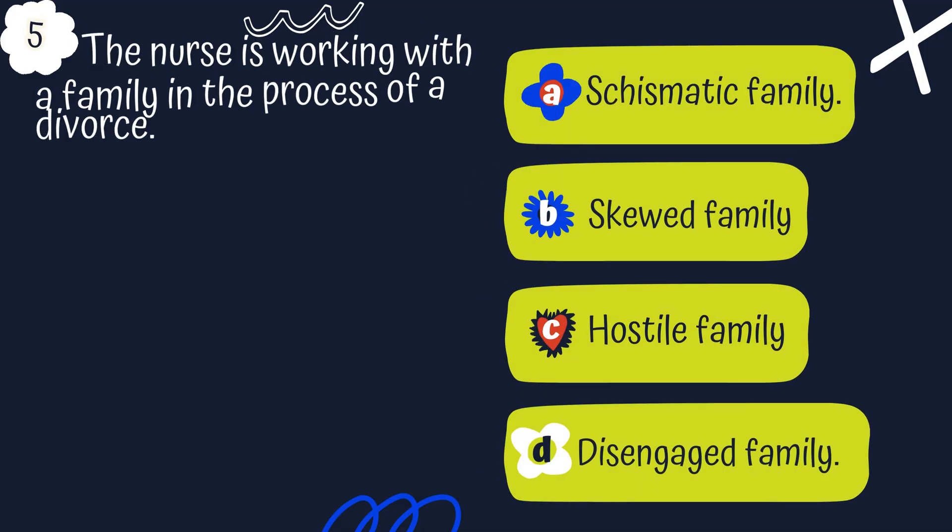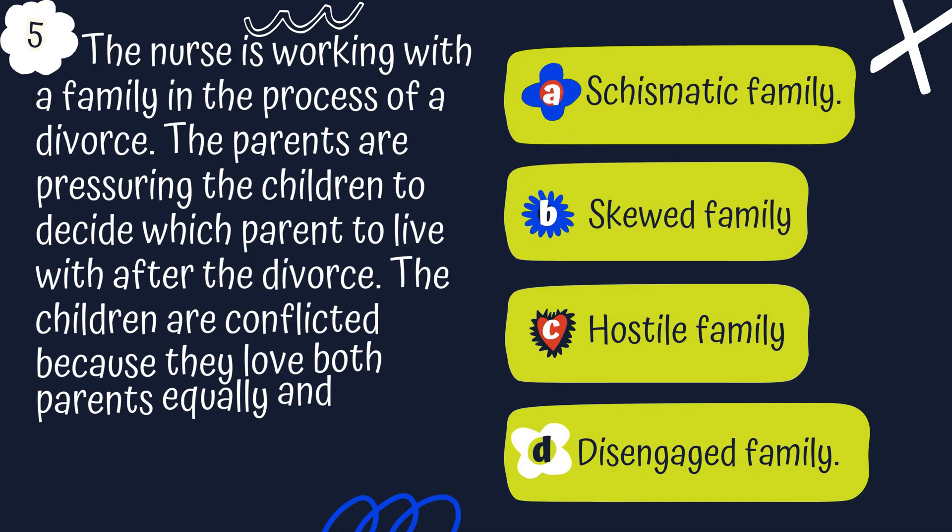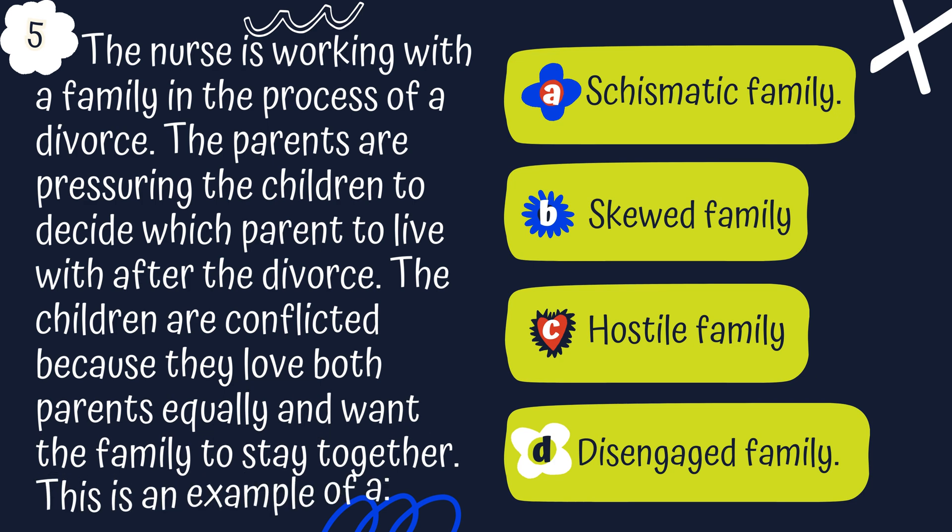Question 5. The nurse is working with the family in the process of a divorce. The parents are pressuring the children to decide which parent to live with after the divorce. The children are conflicted because they love both parents equally and want the family to stay together. This is an example of what? A. A schismatic family, B. A skewed family, C. A hostile family, or D. A disengaged family.